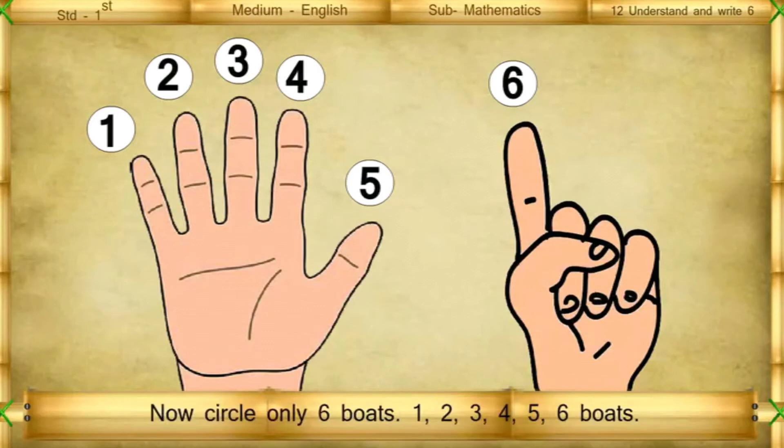Now, circle only 6 boards. 1, 2, 3, 4, 5, 6 boards.